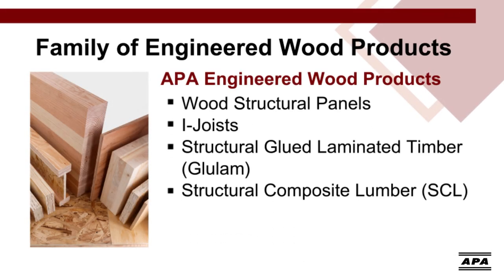Let's start by looking at the group of products that make up engineered wood. They include wood structural panels, I-joists, glulam, and structural composite lumber. These products are used for floor and roof joists, roof rafters, beams, and columns.